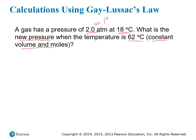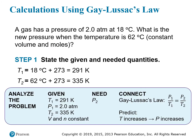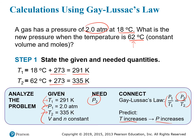There are a few ways to recognize this is a Gay-Lussac's Law problem: you have an initial pressure and temperature, and you're asked to find the new pressure when temperature changes to 62 degrees — the constant volume and moles also indicate Gay-Lussac's Law. As usual, convert temperatures to Kelvin by adding 273 to get T1 and T2. We're given T1, P1, and T2, and asked to find P2. We also predict the pressure should increase since temperature is increasing from 18 to 62°C, so we expect a final pressure greater than 2 atmospheres.